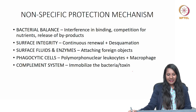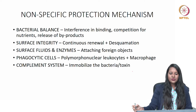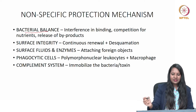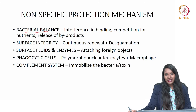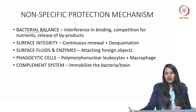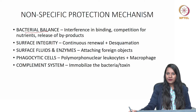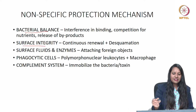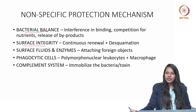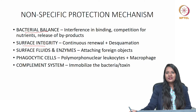Non-specific protection mechanism. The first one being bacterial balance — that is, interference in binding, competition for nutrients, and the byproducts of one pathogen will be toxic to the other pathogen. By all these mechanisms, there exists a balance between various species of microbes in the body. Then comes surface integrity, which is the continuous renewal and desquamation of the epithelial cells to maintain the surface integrity of the epithelium.